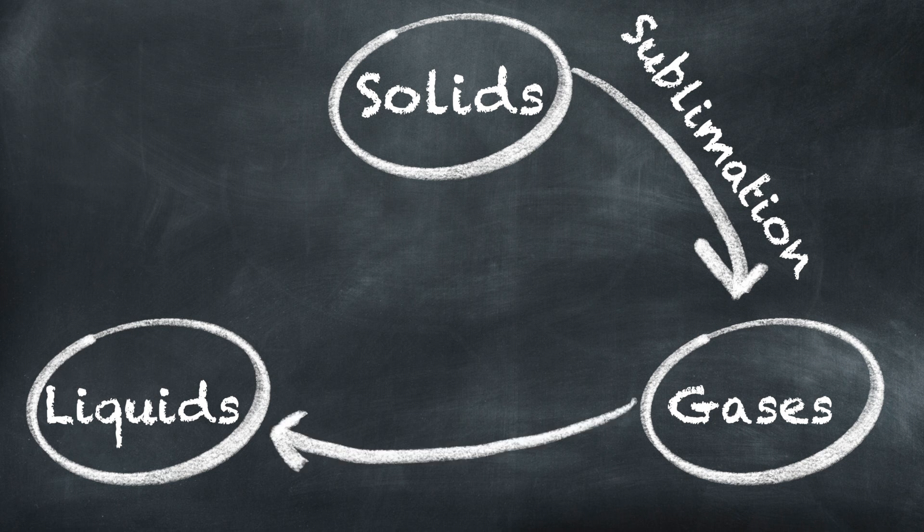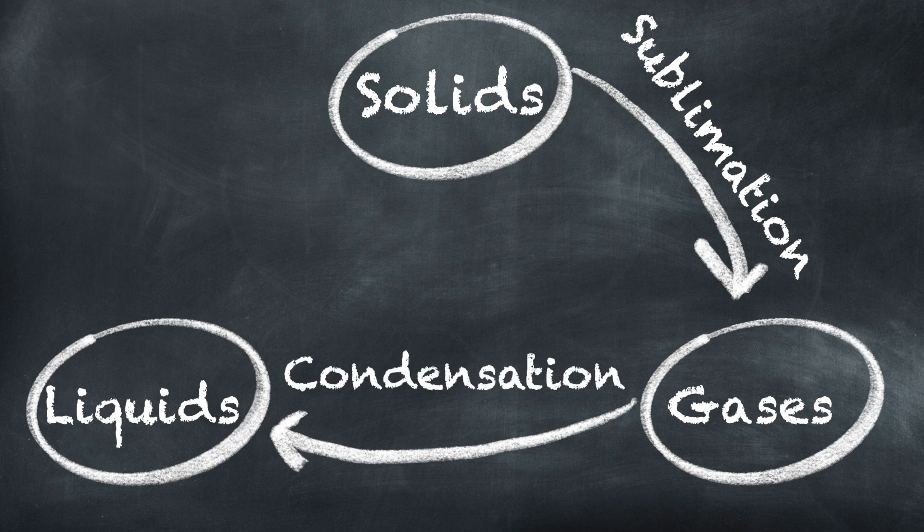Now let's go from gases to liquids. An example of this would be rain — think about the water cycle. Water evaporates from ponds, goes up in the sky, cools down, then it comes down in the form of rain. This is what we call condensation. You can also think of a cold glass of water that has liquid droplets forming around the outside — those come from the gas molecules around the glass cooling down and becoming liquid.